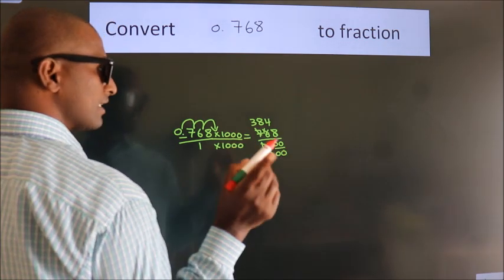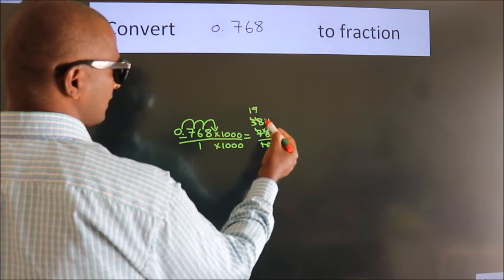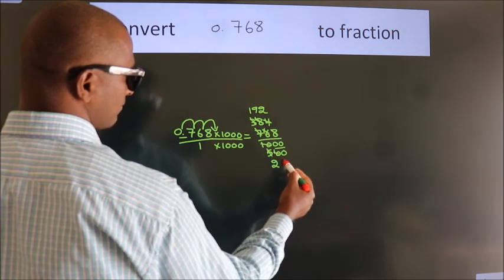I cancel with 2 again. 2 ones, 2 nines, 2 twos, 2 twos, 2 fives, this zero as it is down.